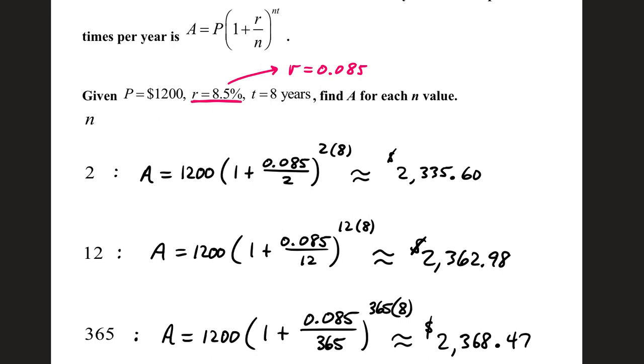Notice, the more compoundings per year, the higher the value of N and the higher the final balance.